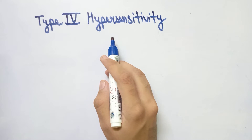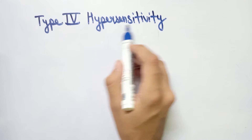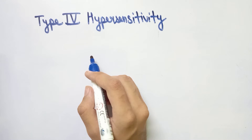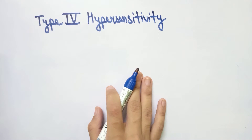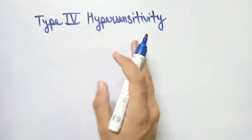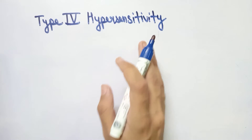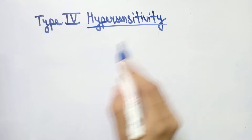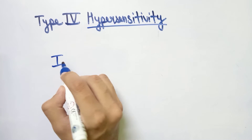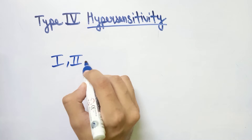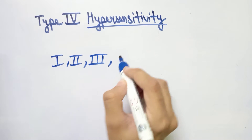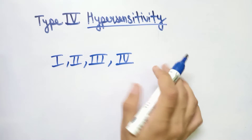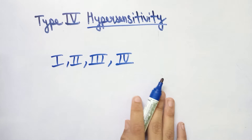Hi guys, welcome back to my channel. Today we will study about Type 4 hypersensitivity. As we know, hypersensitivity is an exaggerated immune response by a host body to a foreign or self antigen to which it has been previously exposed. There are four types: Type 1, Type 2, Type 3, and Type 4 hypersensitivity. In this video we will study about Type 4 hypersensitivity.